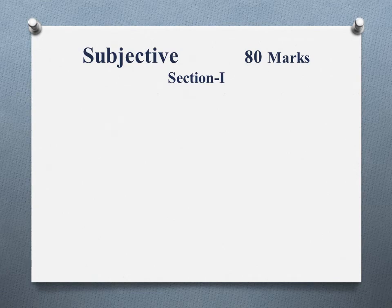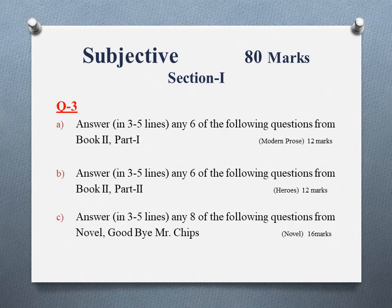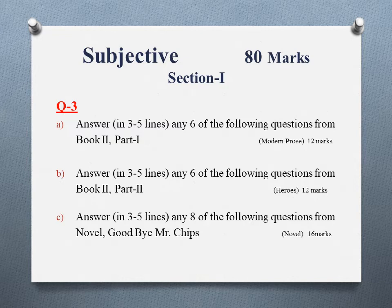The subjective paper is of 80 marks and is divided into two sections. Section One contains Question number three, which has three parts: A, B, and C. It is mainly a question-and-answer section. The questions are taken from Book Two — from Part One, the ten short essays, you will be given around eight questions and you have to answer six, carrying 12 marks. The same applies to Part Two from the Heroes section — again eight questions, answer six, also carrying 12 marks.